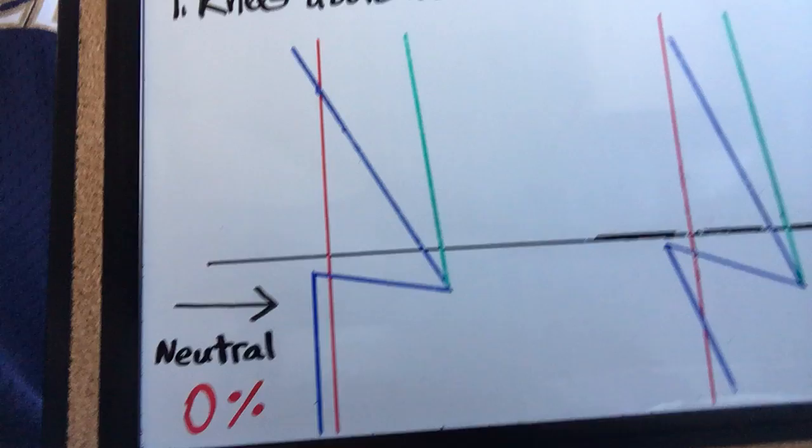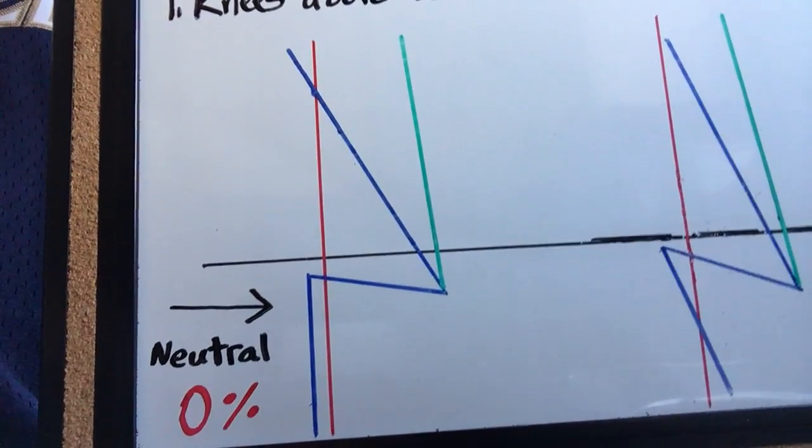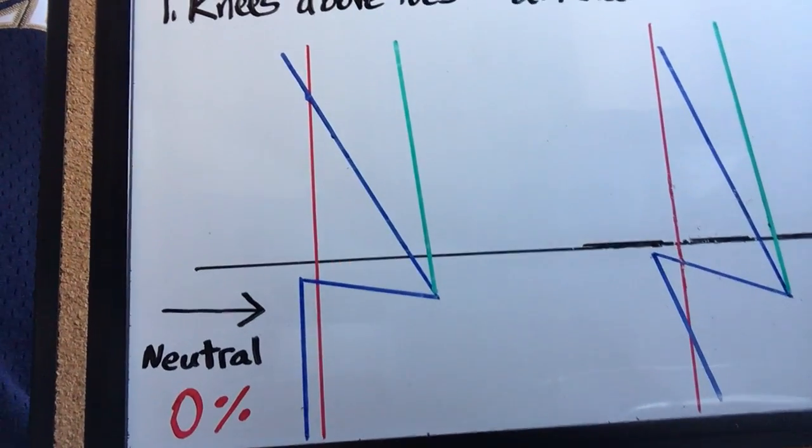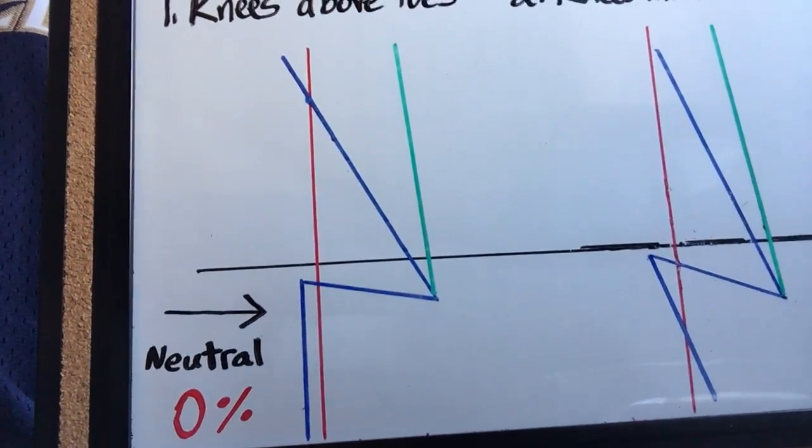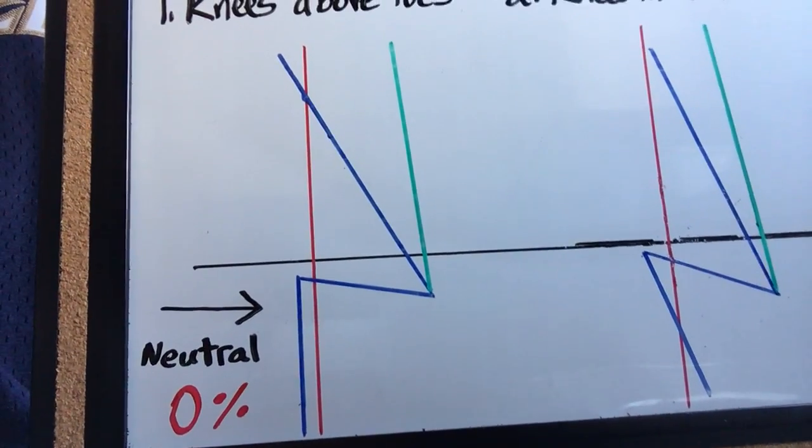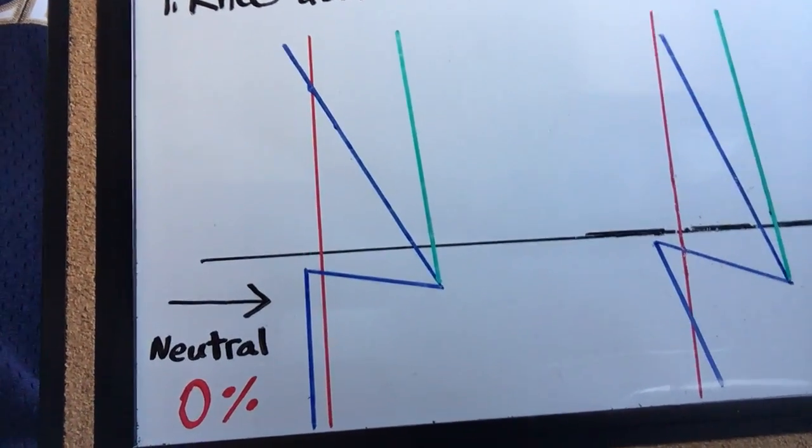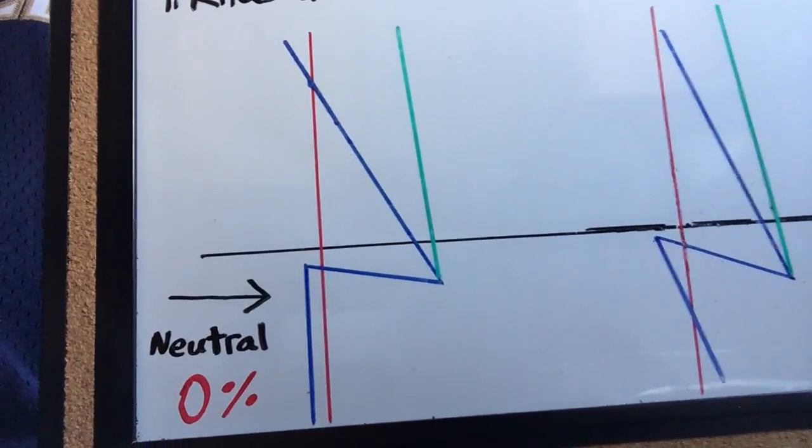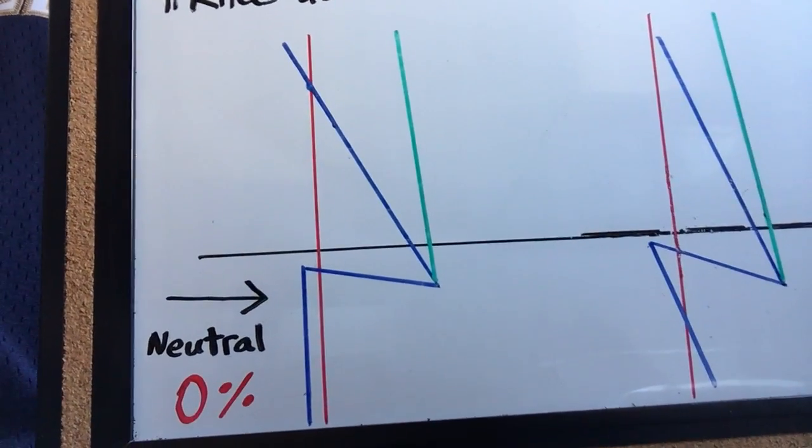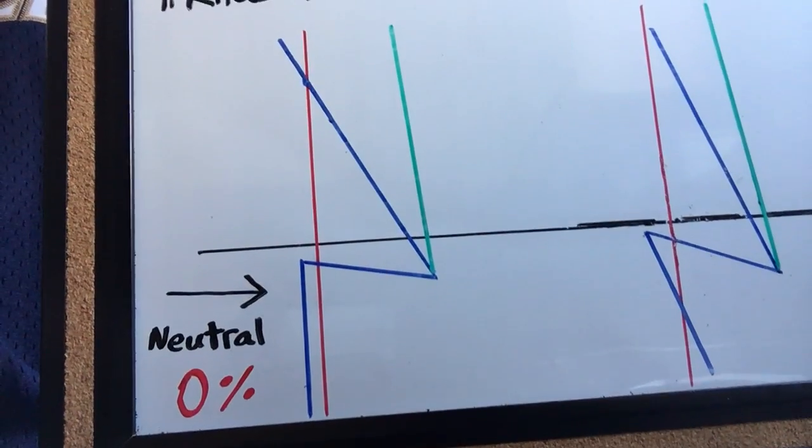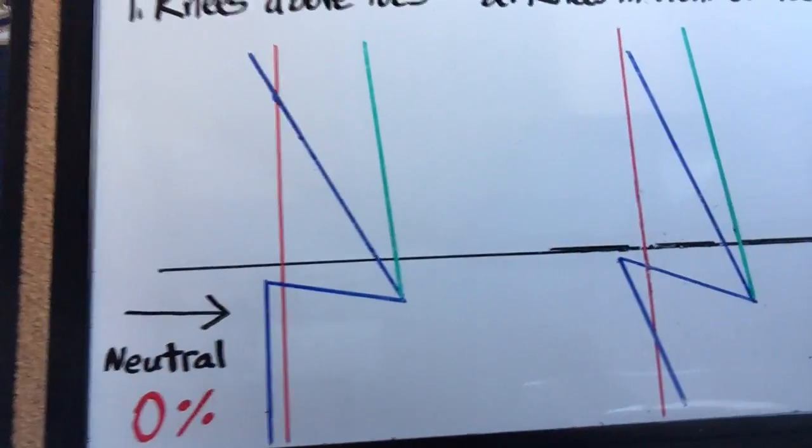If we look at the shin though, the quads are responsible for extending the knee and moving the shin. The shin lever here is parallel to the direction of resistance. It's in a neutral position, meaning 0% of the stress is being dumped onto the quads. Does this mean the quads are doing no work? No. They still have to work to provide stability, but the amount of stress being dumped on them when doing a squat this way is virtually none.